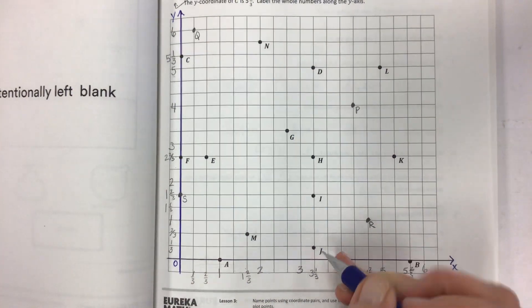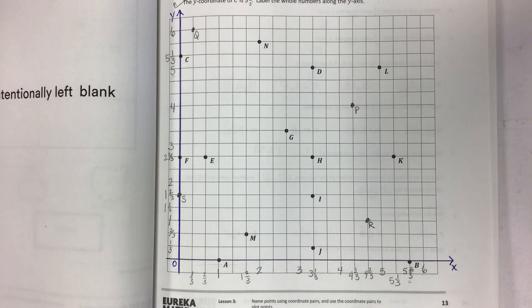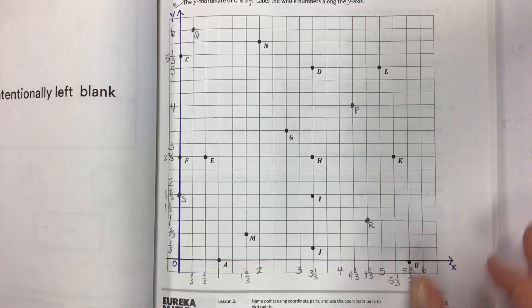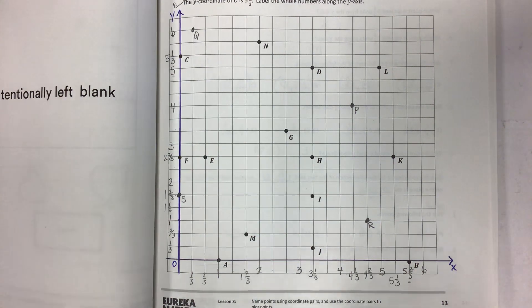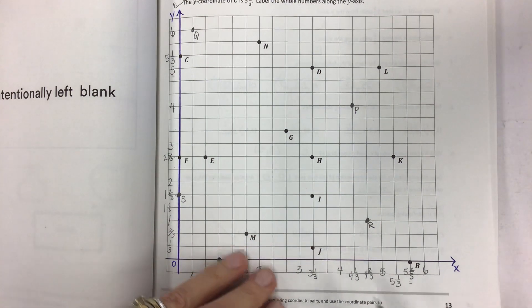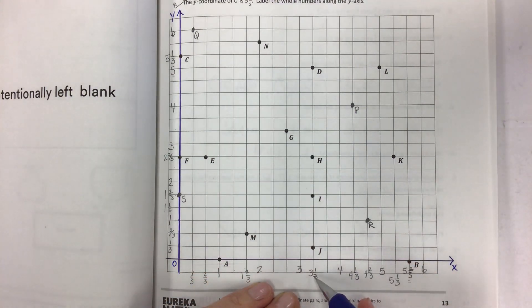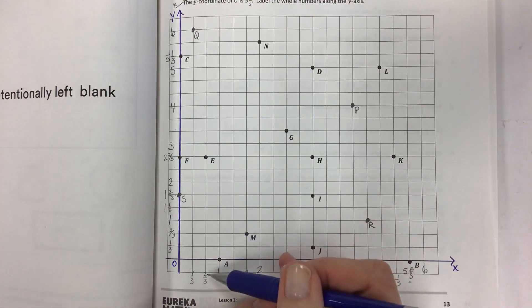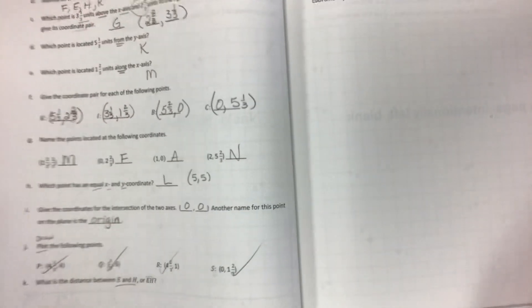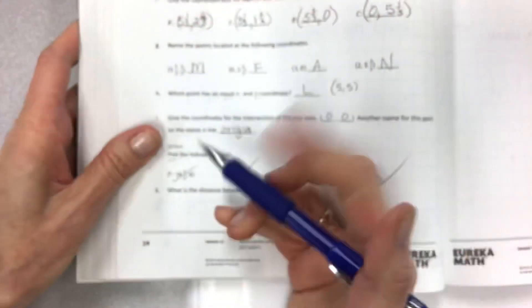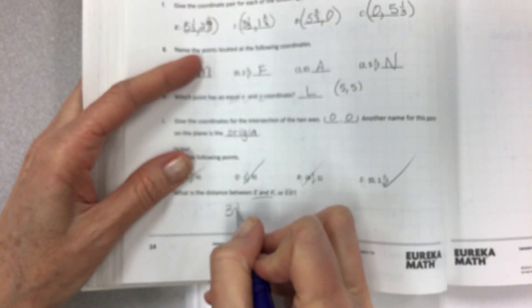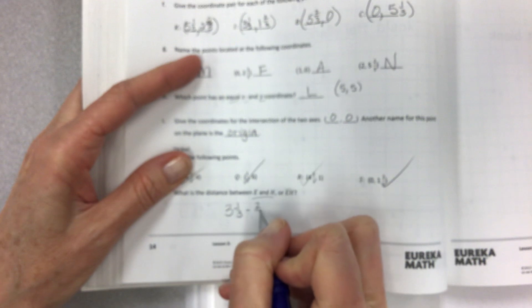Take your larger number, and sorry, I got a whole bunch of stuff out in the interim. So take your larger number, point H, and that's three and a third and then two thirds. So three and a third and two thirds.